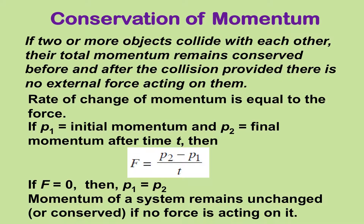Now let us discuss conservation of momentum. According to this law, if two or more objects collide with each other, their total momentum remains conserved before and after the collision, provided there is no external force acting on them. From Newton's law of motion, we know that the rate of change of momentum is equal to the force. If p1 is the initial momentum and p2 is the final momentum after time t, then F = (p2 − p1) / t. If F = 0, then p1 = p2, which shows that the momentum of a system remains unchanged or conserved if no force is acting on it.